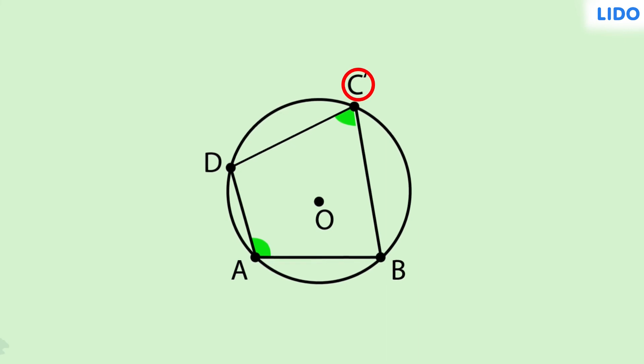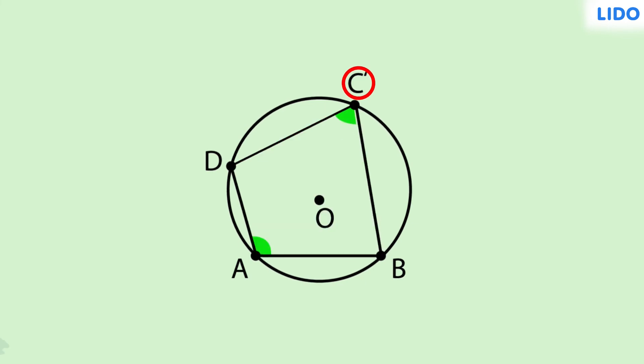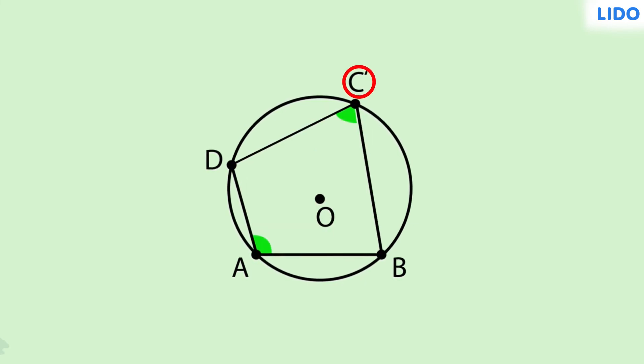Therefore, we can safely say that if the sum of opposite angles of a quadrilateral is 180 degrees, then that quadrilateral is a cyclic quadrilateral.